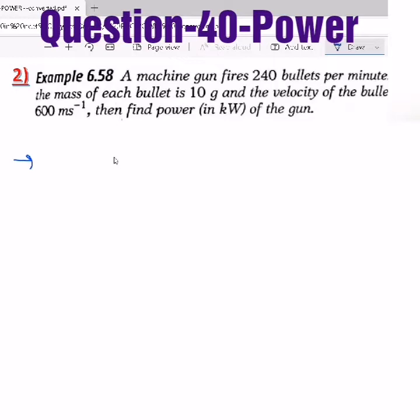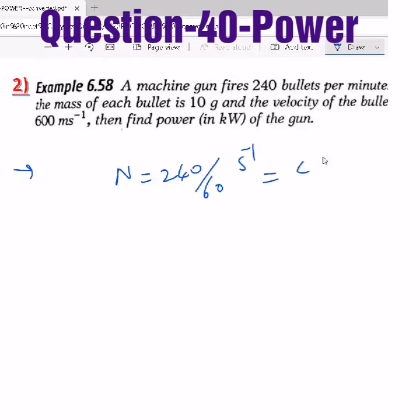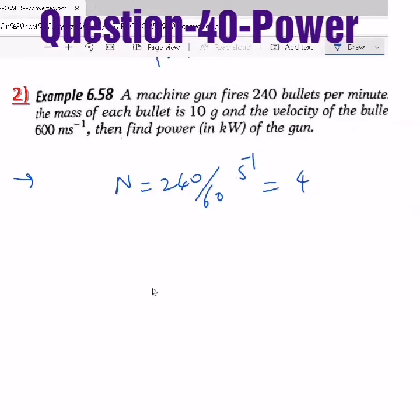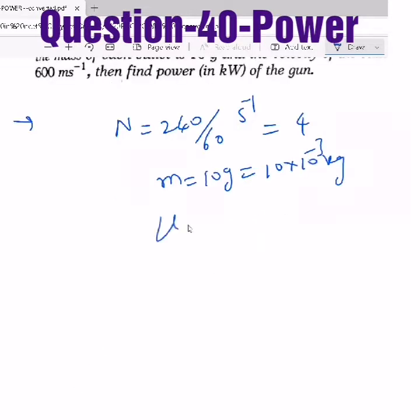Here a machine gun fires 240 bullets per minute, so number of bullets per minute is 240/60, so 4 bullets per second. The mass of each bullet is 10 grams, nothing but 10×10⁻³ kg, and the velocity of each bullet is 600 m/s. Then find power in kilowatt of the gun. So power means work by time. Work is nothing but change in kinetic energy by time.